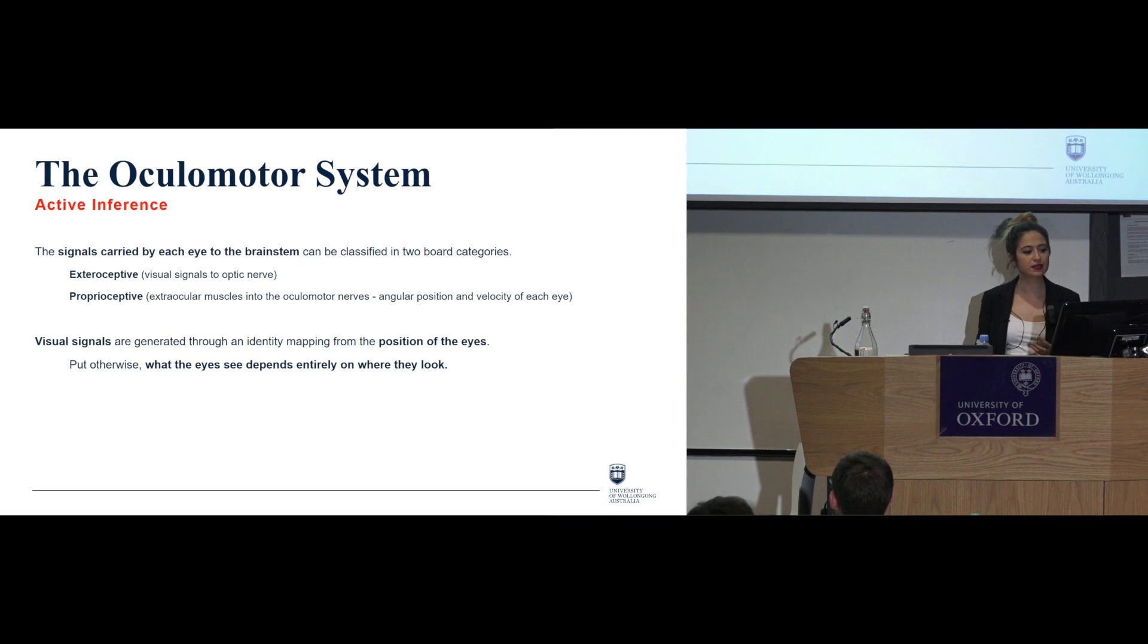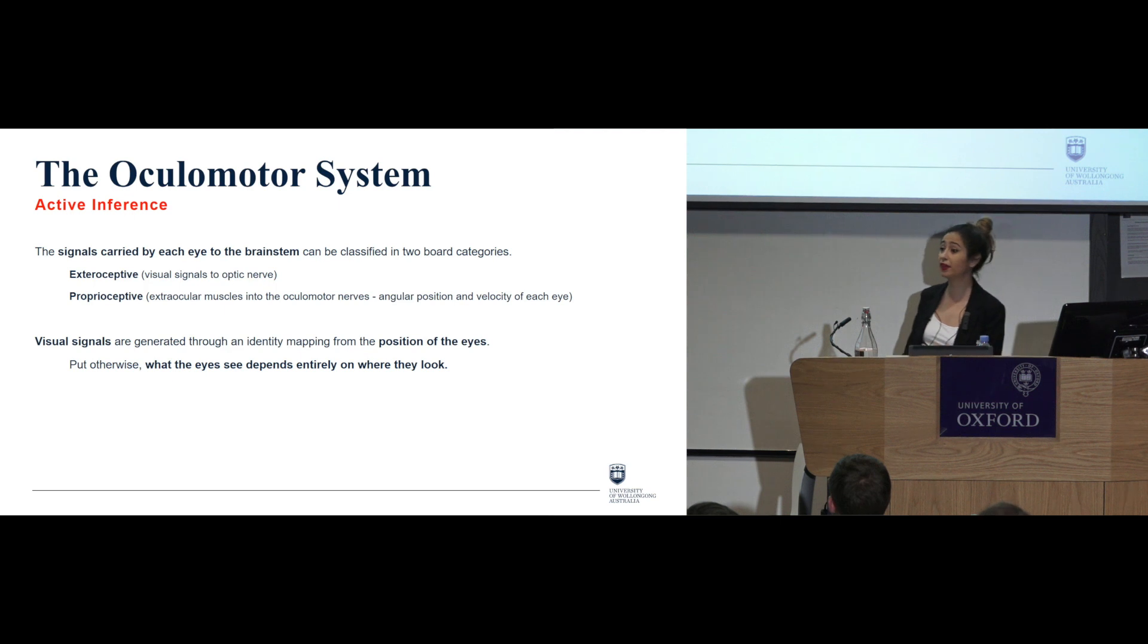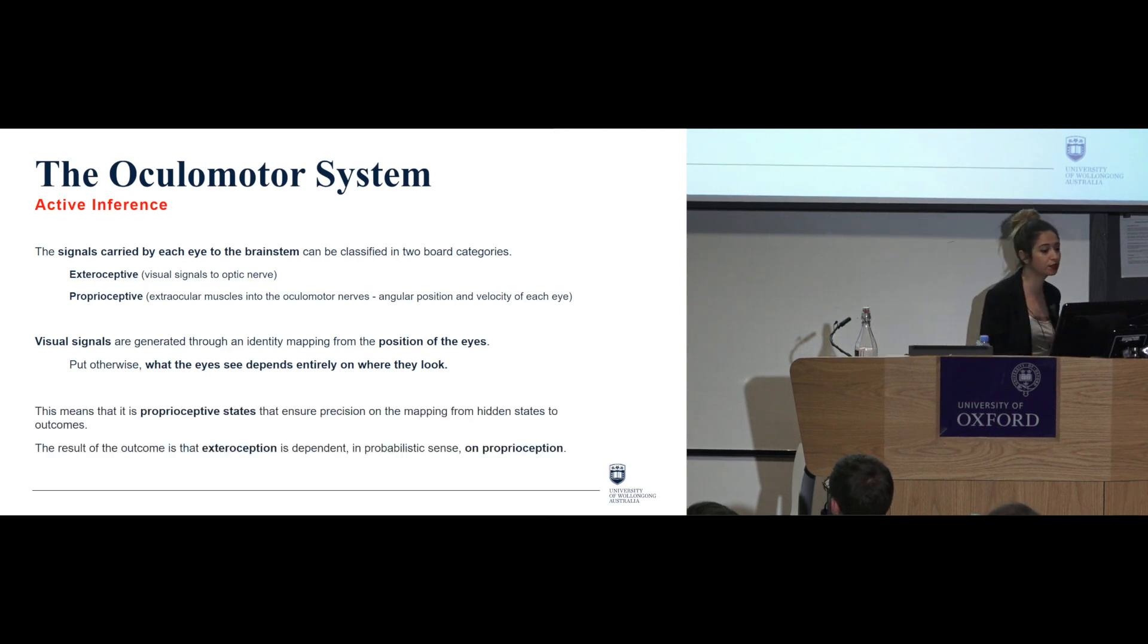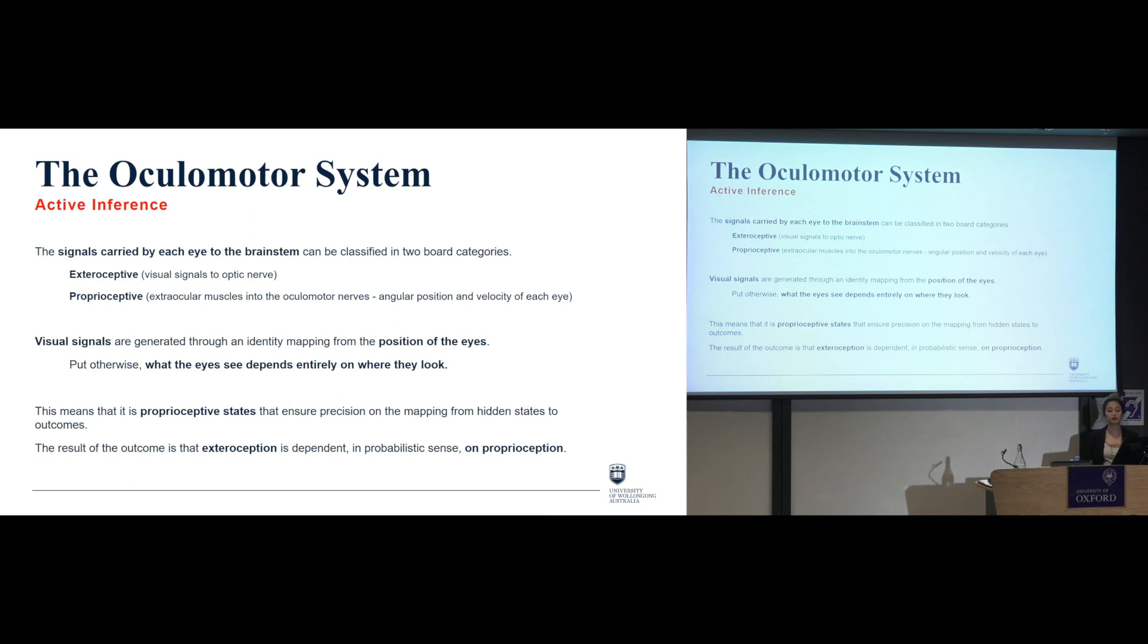So this means that what the eye sees depends entirely on where they look. This becomes quite important because then proprioceptive states are what comes to ensure that these mapping from the hidden states to outcomes. And the result of these outcomes is that then exteroception, so vision, is dependent in a probabilistic sense on proprioception, which is to say in action. So the idea is that vision is dependent on action, and action will be what explains these visual connections.